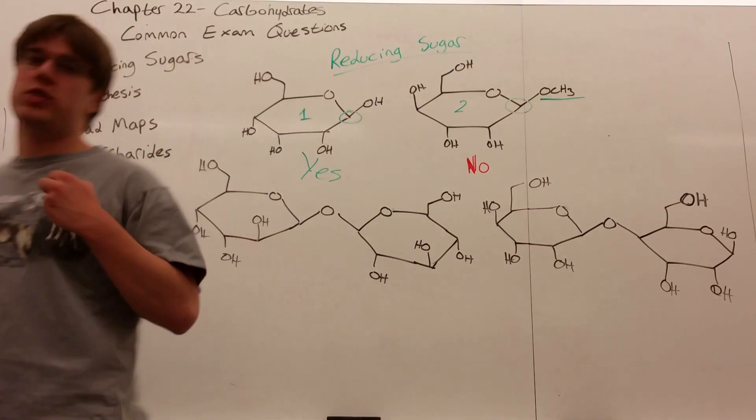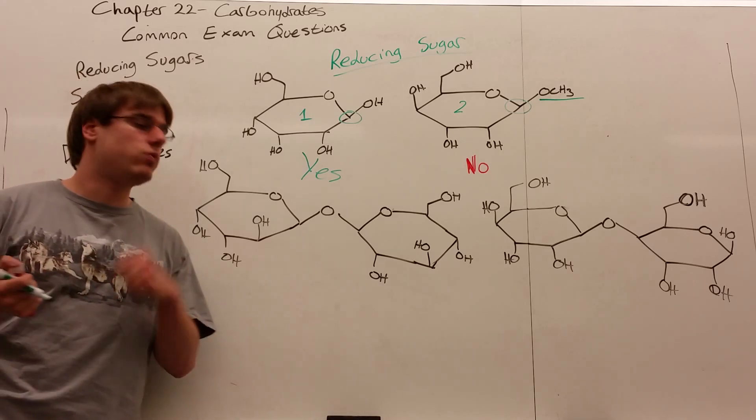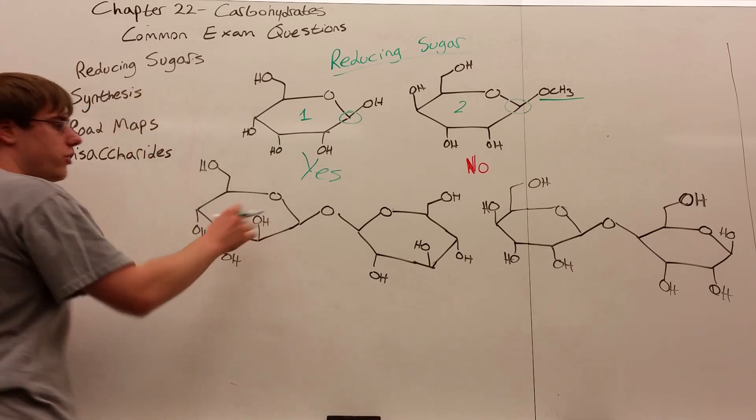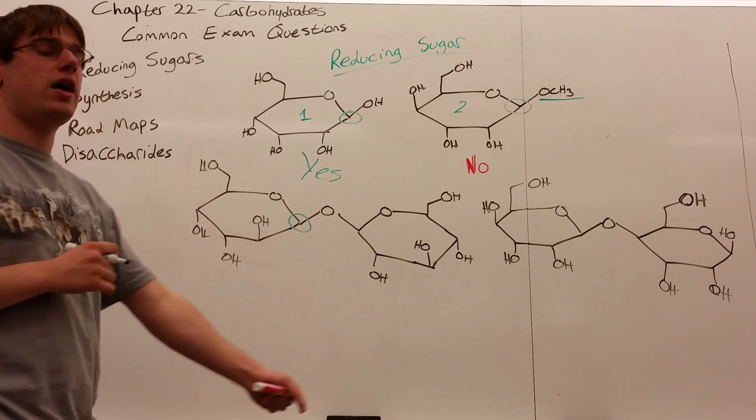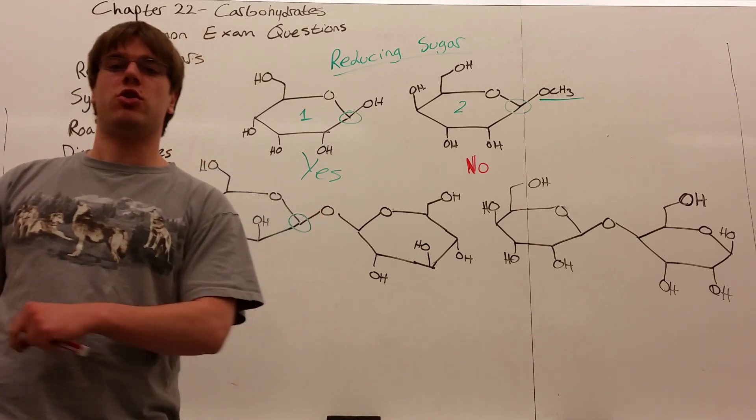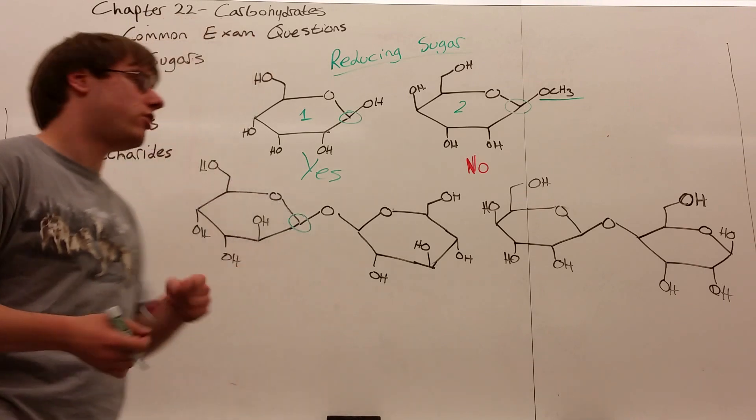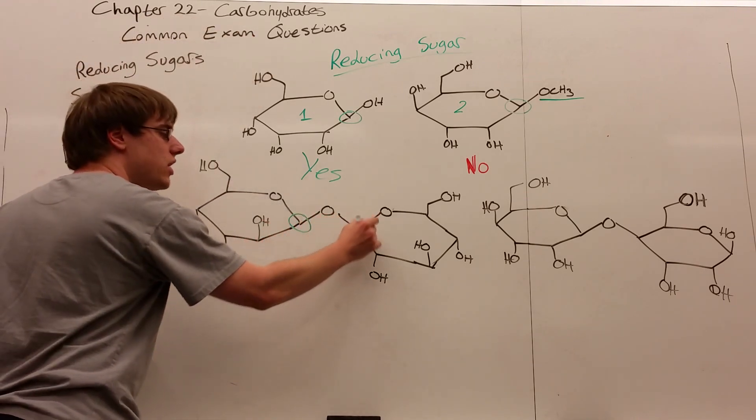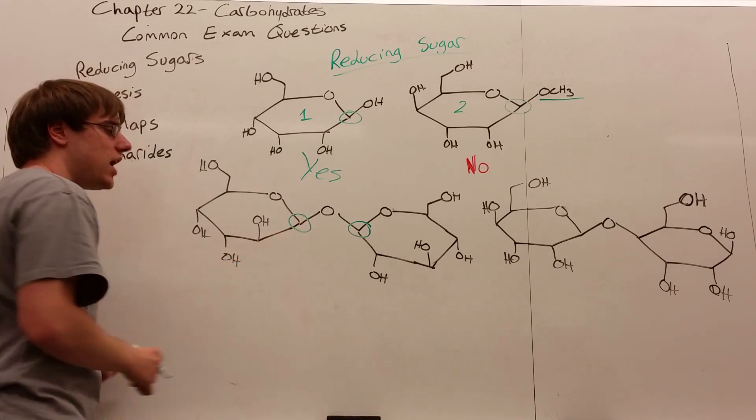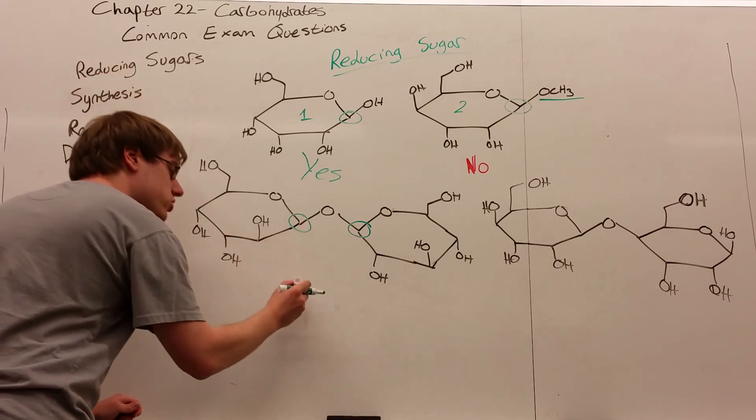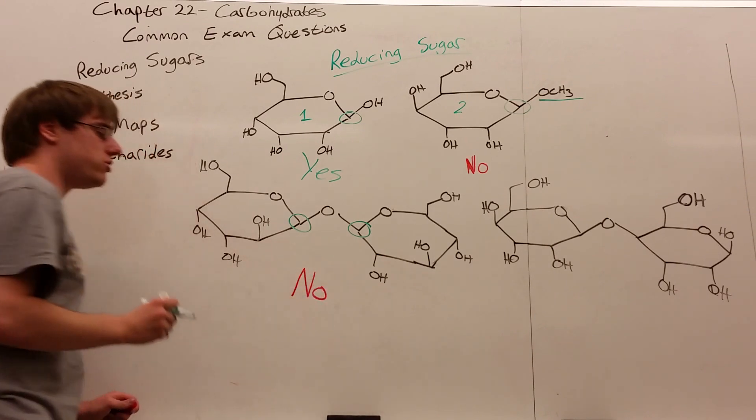Now this concept applies to disaccharides and polysaccharides as well. So again, just look for your anomeric carbon, which is this one over here, and you should look for the anomeric carbon in every sugar ring. If it's a disaccharide or polysaccharide, which means this is one and this is the other. And looking at both of those, neither of those two carbons have their anomeric OHs. So this is not a reducing sugar.